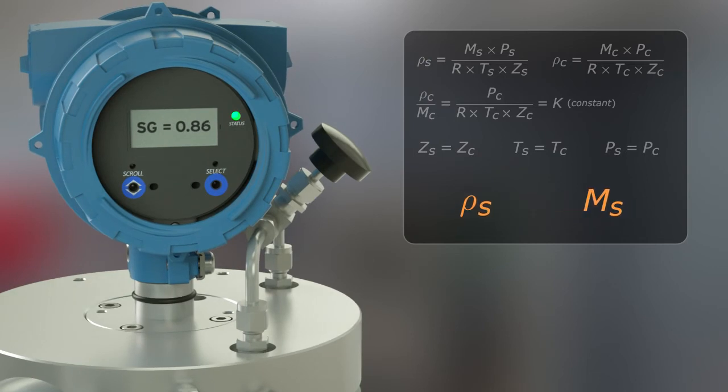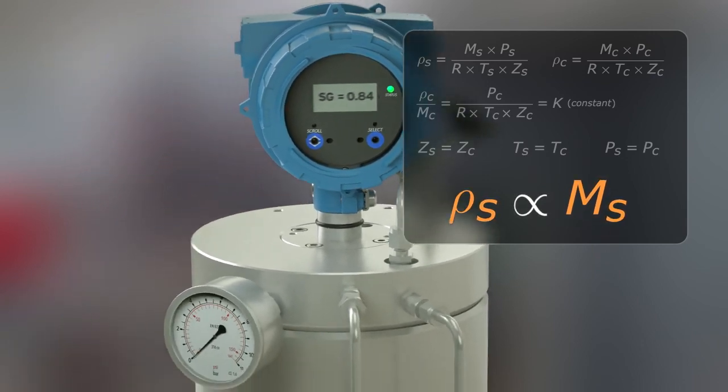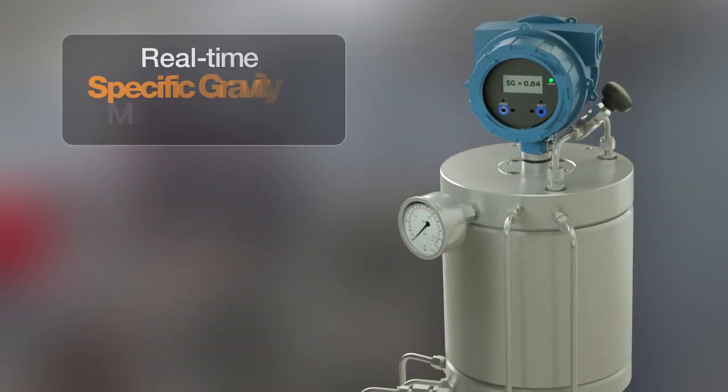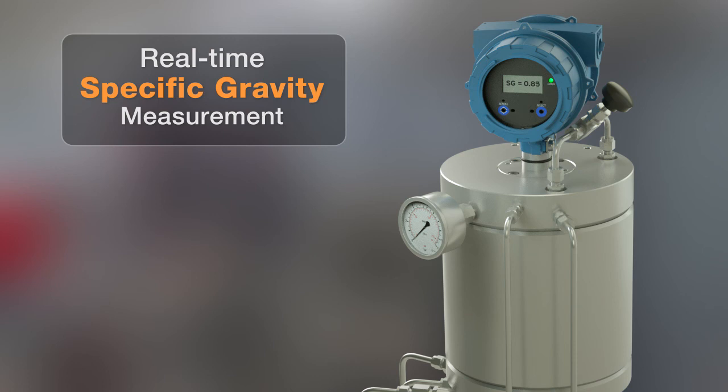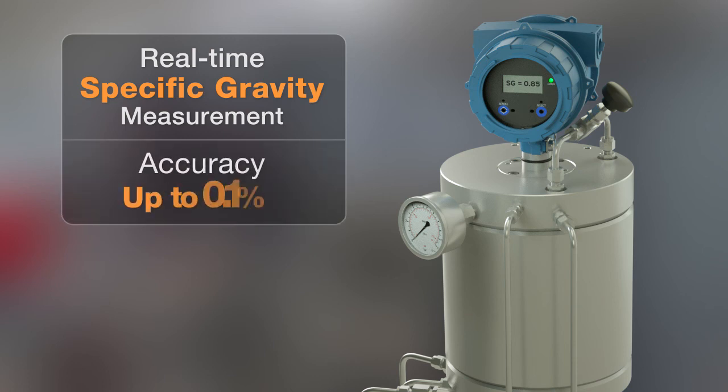As a result, only changes in gas composition will cause a change in the measurement of the sensor, and a continuous flow through the meter is able to provide a real-time specific gravity measurement with an accuracy up to 0.1%.